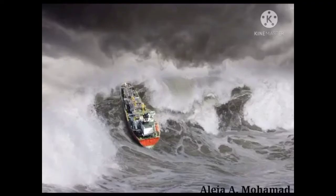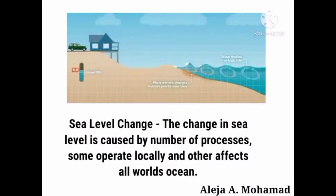This is an example of rogue waves. Sea level change — the change in sea level is caused by a number of processes; some operate locally and others affect all the world's oceans. There are different types of sea level change.